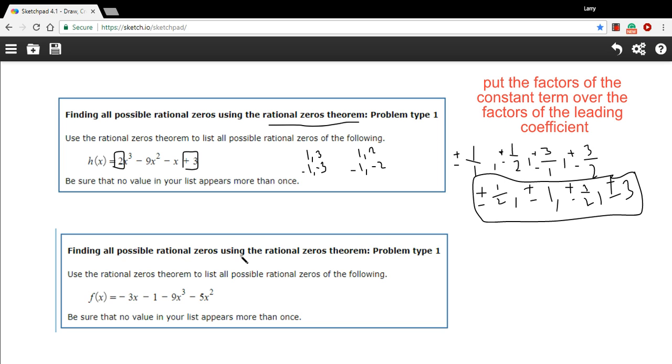So there's our list of all the possible zeros of this function. Let's try one more for practice. This one is slightly trickier only because they have not ordered this function in the way we normally do. So when you identify your constant term and leading coefficient, make sure you've got the right one.